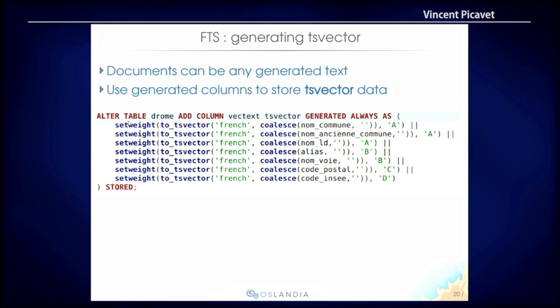I can also set weights to different attributes so that different parts of the text have different importance. Communes will have importance A, which is the most important. You have weights A, B, C, D which you can assign to parts of your text to determine which part has the most importance. I add a new generated column to my table which is created automatically, stored as materialized, so I can create indexes on it and it will be fast. As soon as data is added to the table, it will automatically create the TS Vector data. That's a very convenient feature from latest PostgreSQL — the generated columns. Before that, we had to use triggers to generate the column.